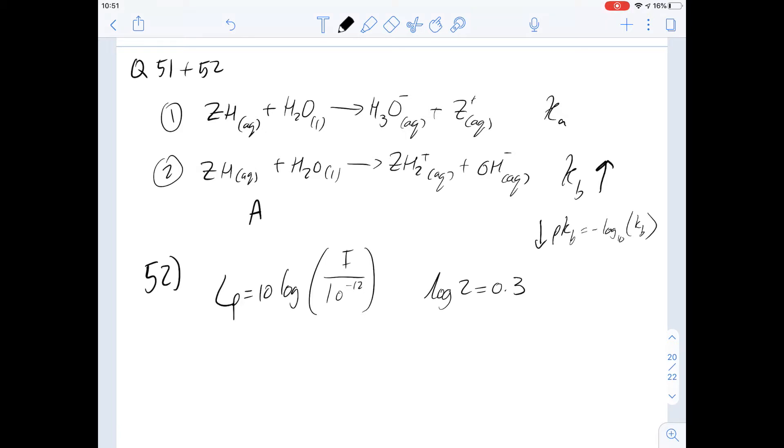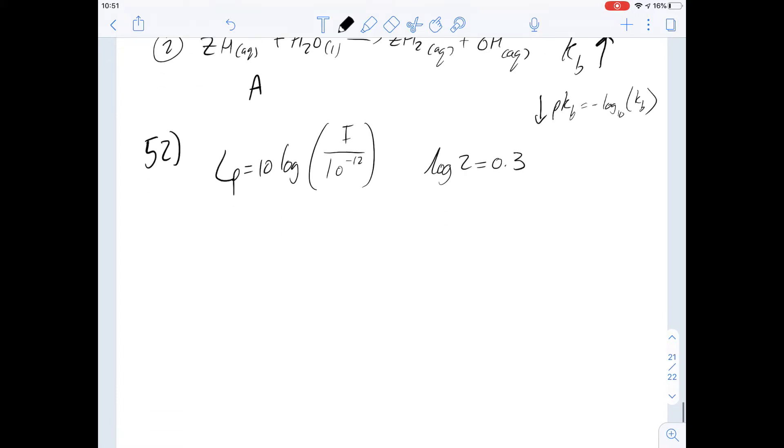52 then talks about the intensity of sound that an ear can cope with and we're given a table and there's two useful values on this table and also an equation which we're going to use.